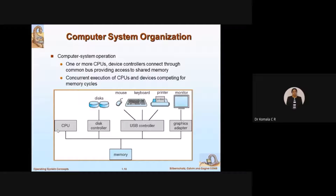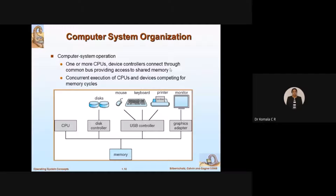Let us understand what computer system operation is. One or more CPUs can be used — I have shown only one, but you can go for more than one. In place of these I/O devices, you can also connect another computer. So you can have communication between different computers as well. You can have one or more CPUs and device controllers. Each controller controls a specific device — the disk controller controls the disk, the USB controller controls the mouse and keyboard. All these controllers are connected through a common bus.